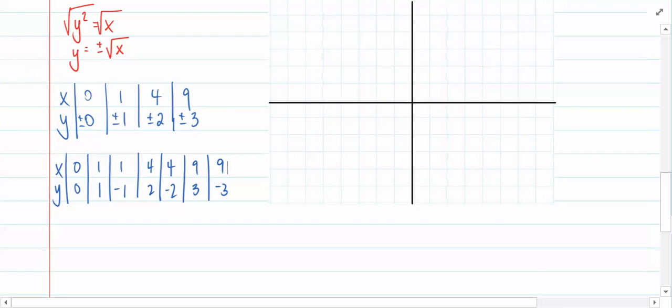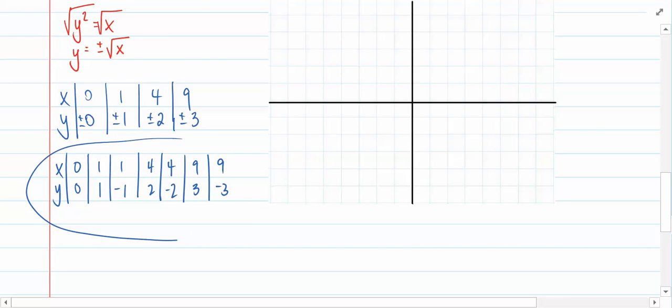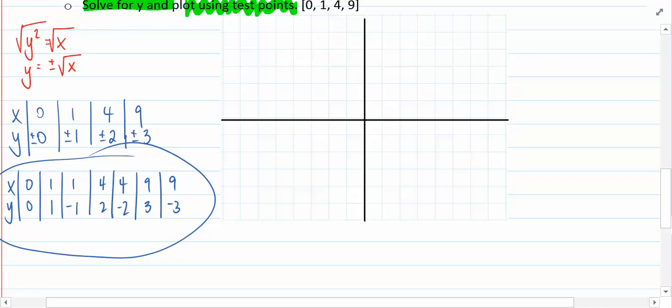I'm going to move forward to graph or plot these points. I have a value at 0, 0. I have one at 1, 1. I have one at 1 and negative 1. I have a point at 4, 2. And I also have a point at 4, negative 2. I've got a point at 9, 3. Now 9 is just off the page here, and 3 would be right here. And I also have a point at 9, negative 3. That would be down here.